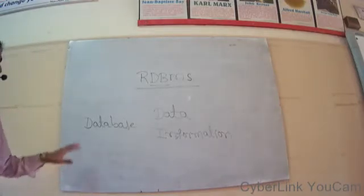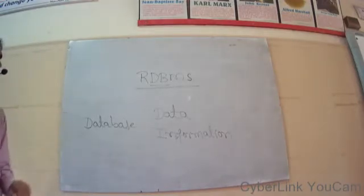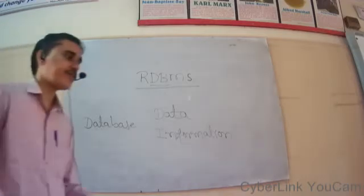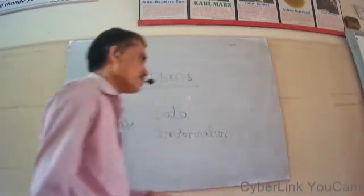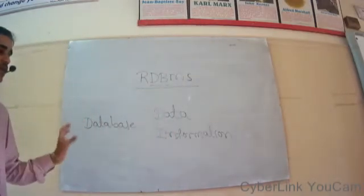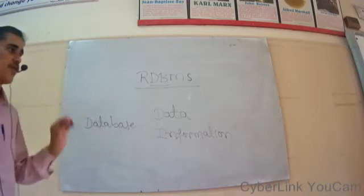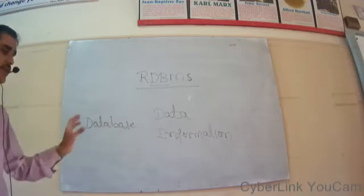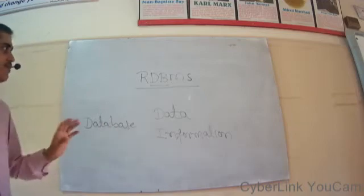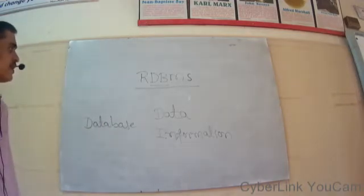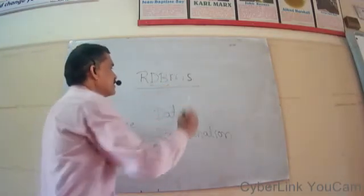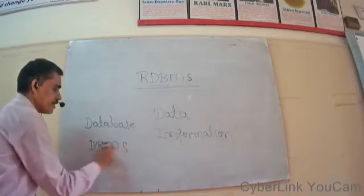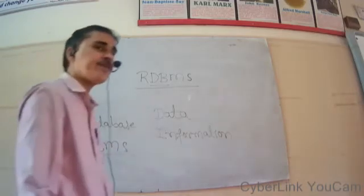The database is the broader memory area where all information is stored in an organized format, so that it can be used whenever required on a timely basis. Interrelated data stored in a specified format is called the database. Now let us consider the next term: DBMS. DBMS stands for Database Management System.